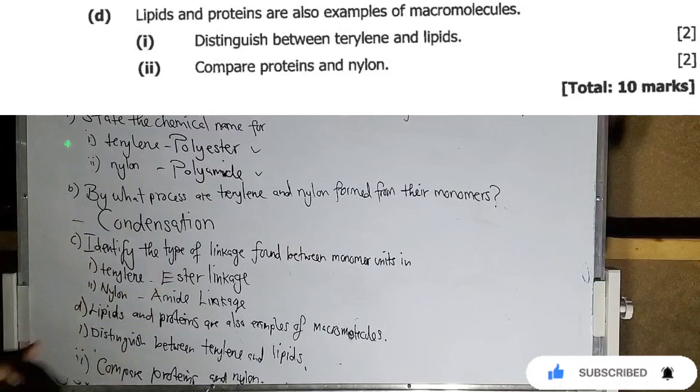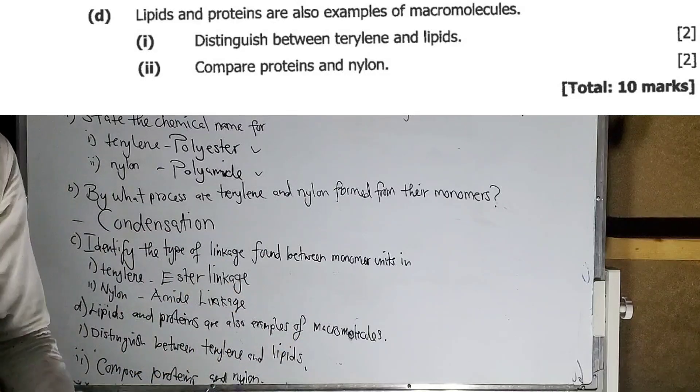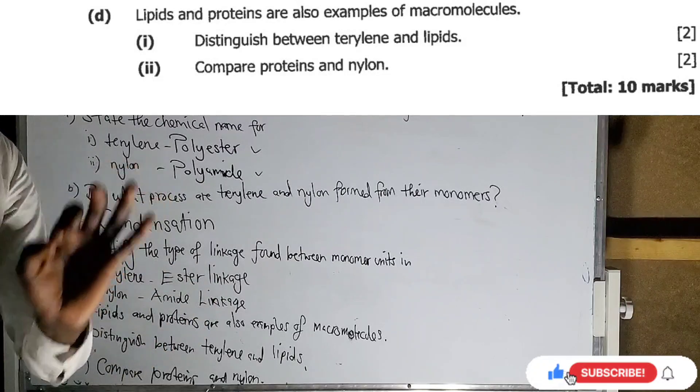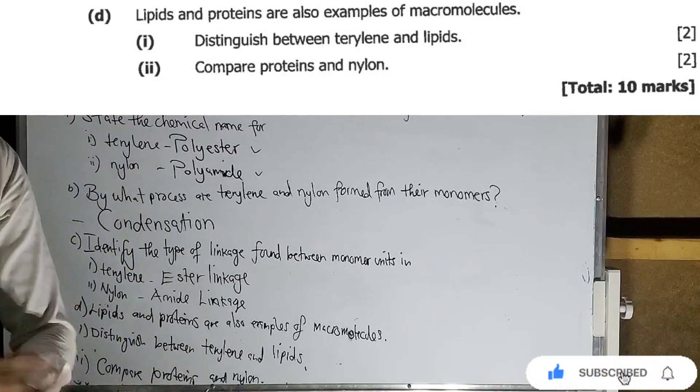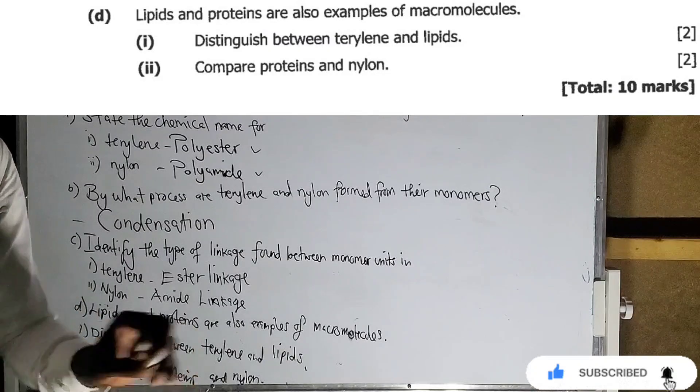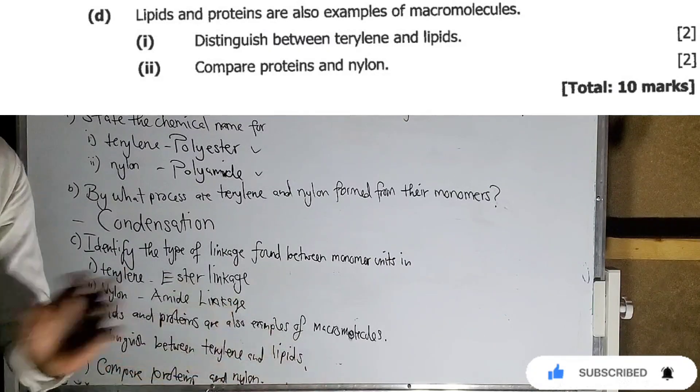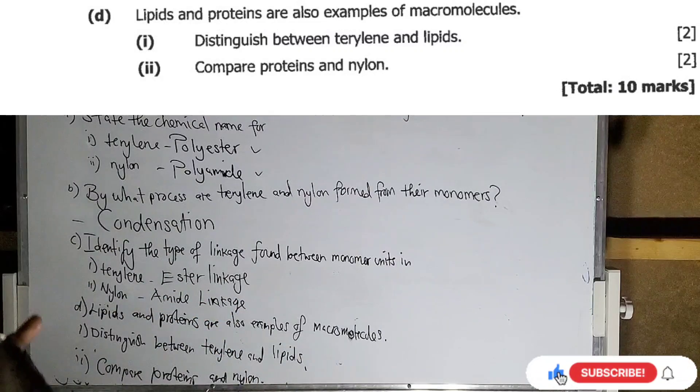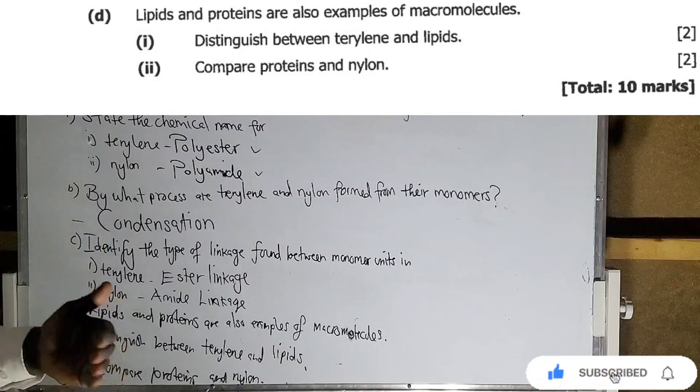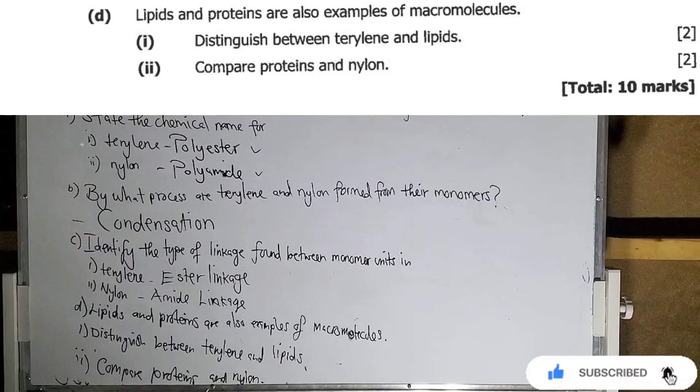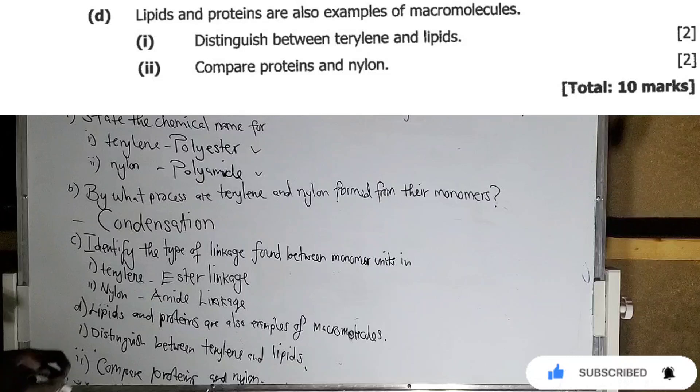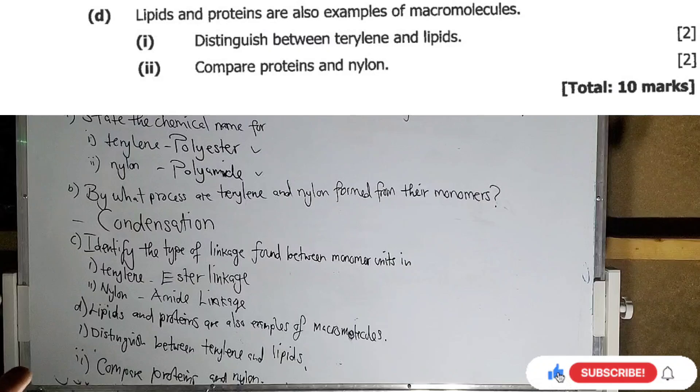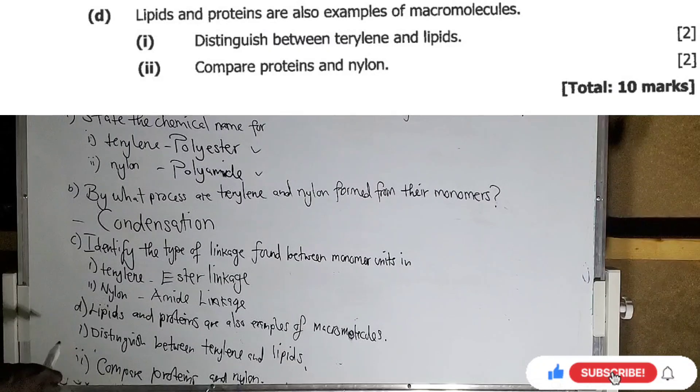Let me explain a bit before we go to the questions here. Under polymerization, we have two types of polymerization. You have synthetic polymers and natural polymers. Synthetic polymers, these are artificial polymers, man-made polymers. Natural polymers, these are polymers that are found naturally in plants or animal material, such as lipids and proteins. So, lipids and proteins are good examples of natural polymers.